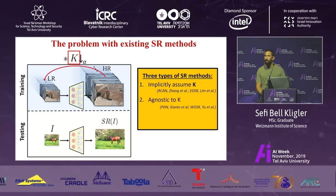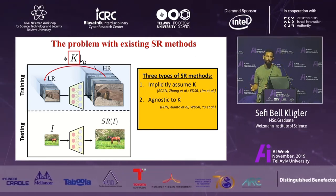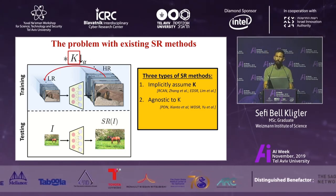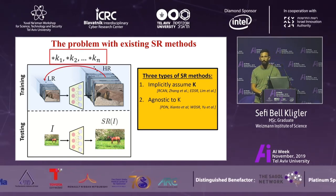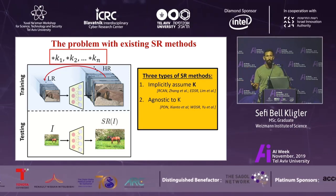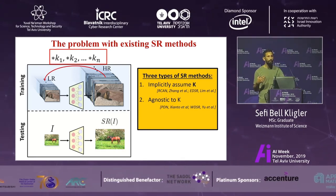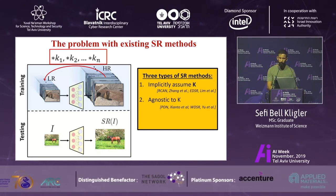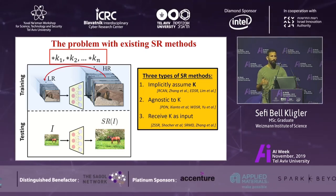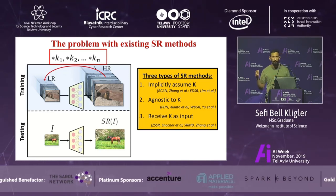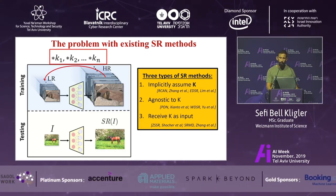A second family tries to be agnostic to the kernel, producing a super-resolution image regardless of the kernel and without any information about it. Rather than downscaling with one specific kernel K, they downscale with a number of kernels across many images, hoping that at test time they're able to enhance an image without any kernel knowledge — though I'll show why this doesn't work either. The third family assumes they receive the kernel of the image as input, which is a strong assumption. That's where we come into the picture: we will provide them that image-specific kernel.